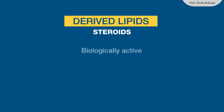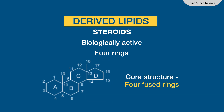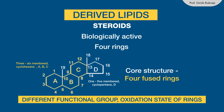Steroids are biologically active organic compounds with 4 rings in a specific molecular configuration. The core structure has 17 carbon atoms arranged as 4 fused rings — three 6-membered cyclohexene rings (the A, B, and C rings) and one 5-membered cyclopentene ring (the D ring). They may vary by the functional groups attached to this 4-ring core and by the oxidation state of the rings. Examples include corticosteroids, sex steroids, and vitamin D forms.